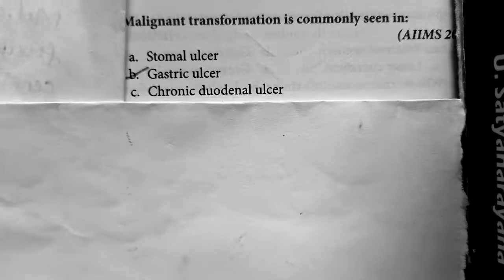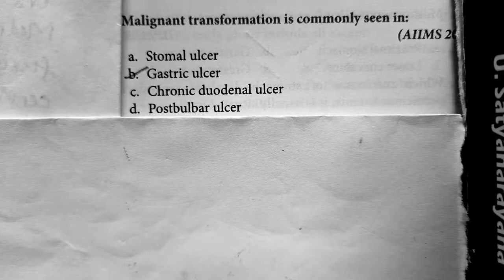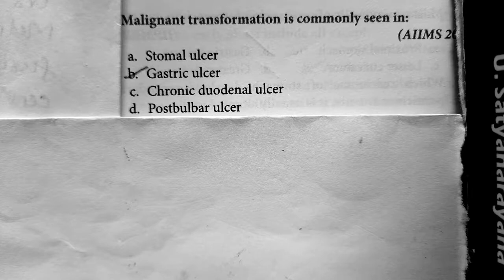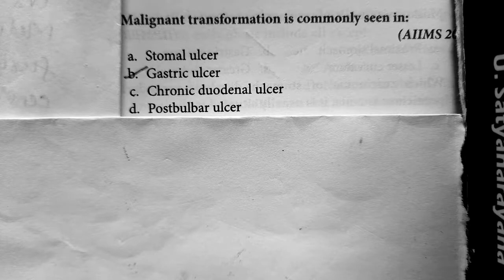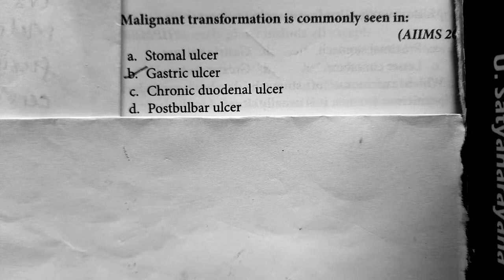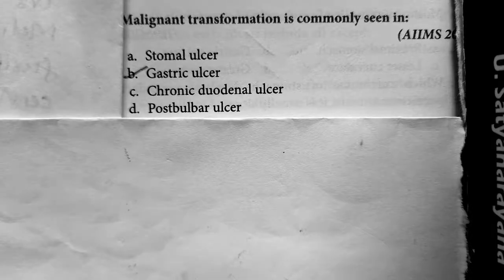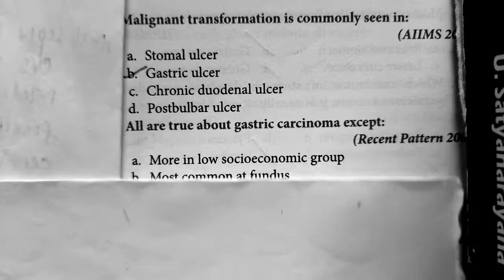The first question: malignant transformation is commonly seen in which of the following? The answer is gastric ulcer. Among gastric ulcers, only 0.1 to 1% may progress to carcinoma of stomach. Duodenal ulcers are not at all pre-malignant — they do not progress to gastric carcinoma. Stromal ulcer and postbulbar ulcer also do not predispose to malignant transformation.